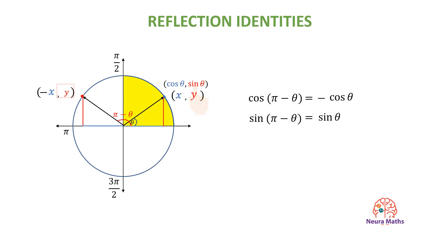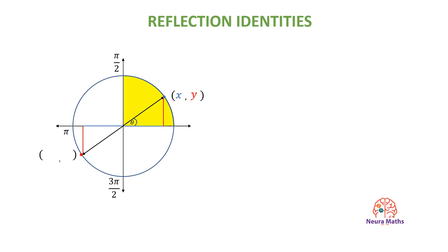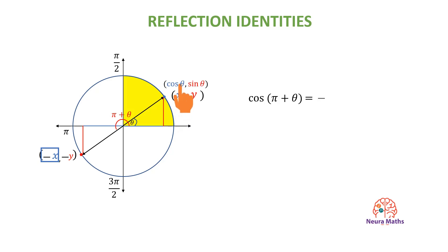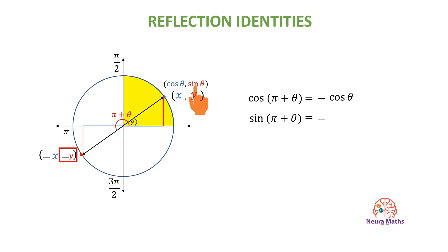When reflecting through the origin, the coordinates of the image would be negative x and negative y, and the new angle would be pi plus theta. So the cosine of pi plus theta equals negative the x-coordinate of angle theta, which is negative cosine of theta. The y-coordinate of the image is equal to negative the y-coordinate of the original, so the sine of pi plus theta equals negative sine of theta.